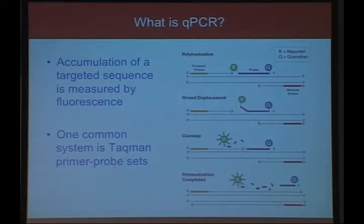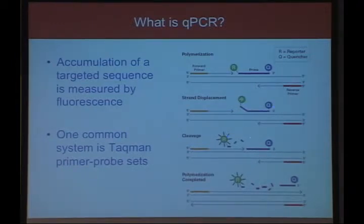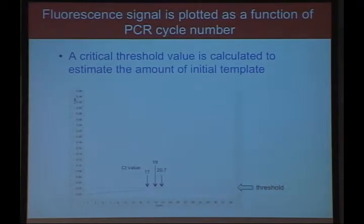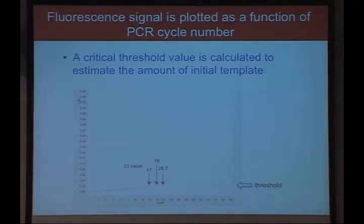The reporter is fluorescent but not in close proximity to the quencher. During amplification, the forward primer displaces the probe, breaking the link between quencher and reporter, releasing fluorescence. Every amplification event releases more fluorescence, and you plot the amplification of your gene. The sooner the signal rises, the more target sequence was present initially.